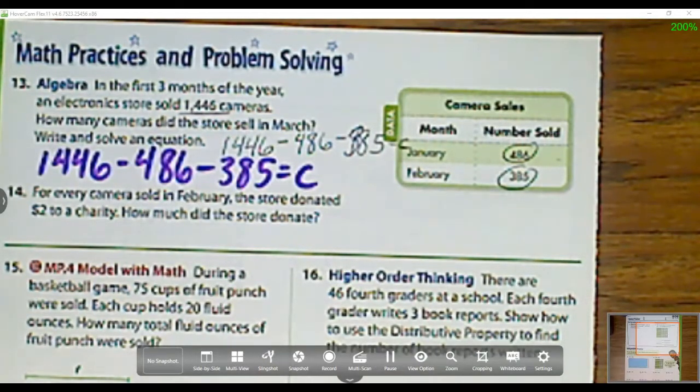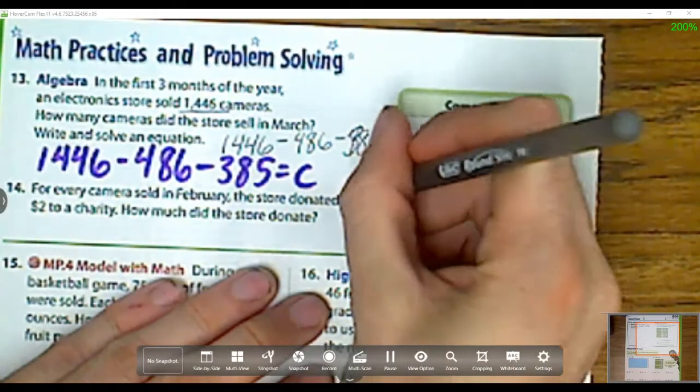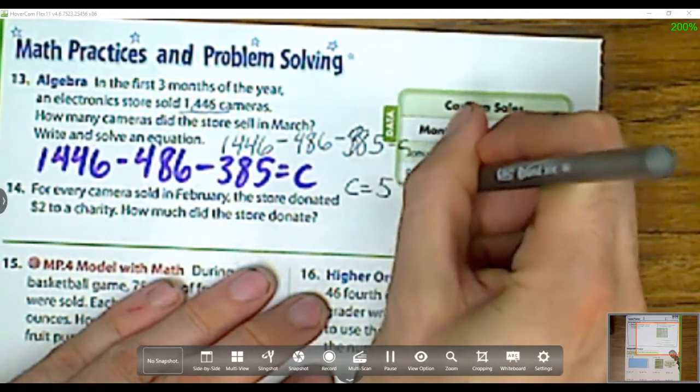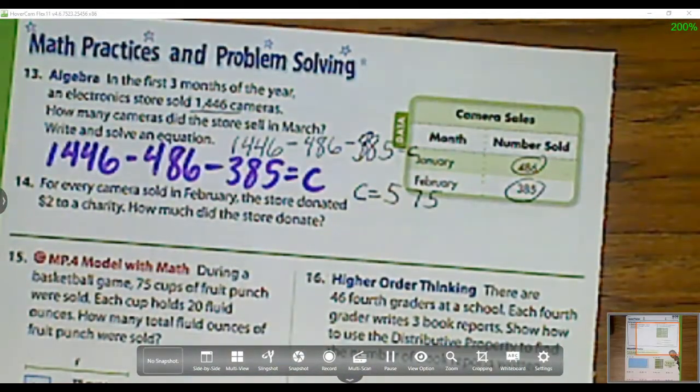So I'm going to rewrite it for us. 1,446 minus 486 minus 385 equals C for cameras. I could do M for March, whatever I want. That's my equation. Notice how I have that equal sign. Now when I subtract, what does C equal? Well, C equals 575. So in March, they sold 575 cameras.